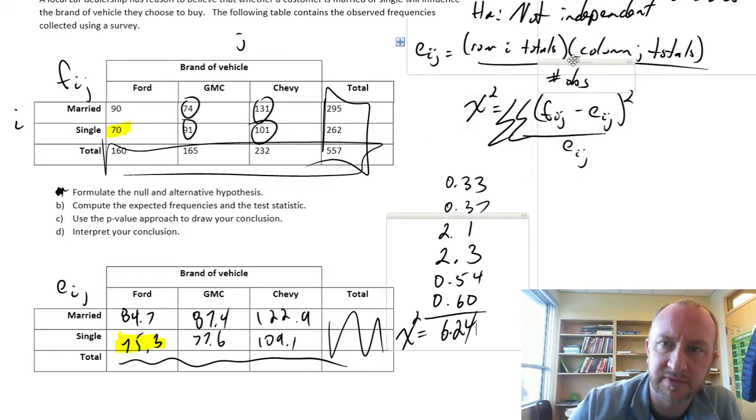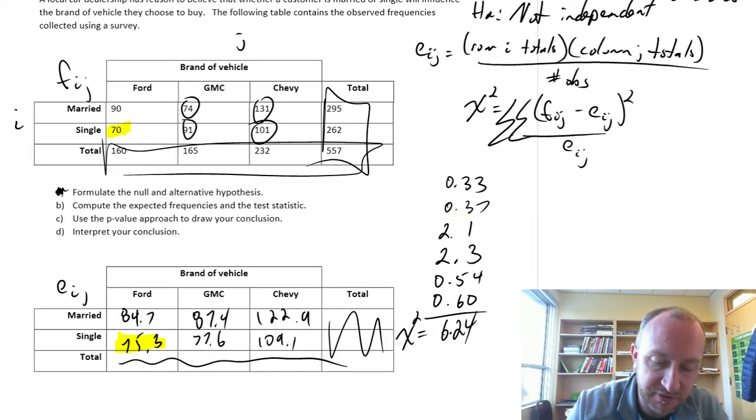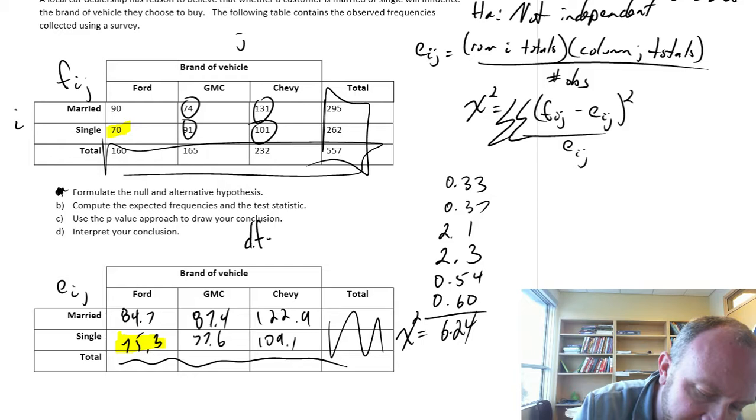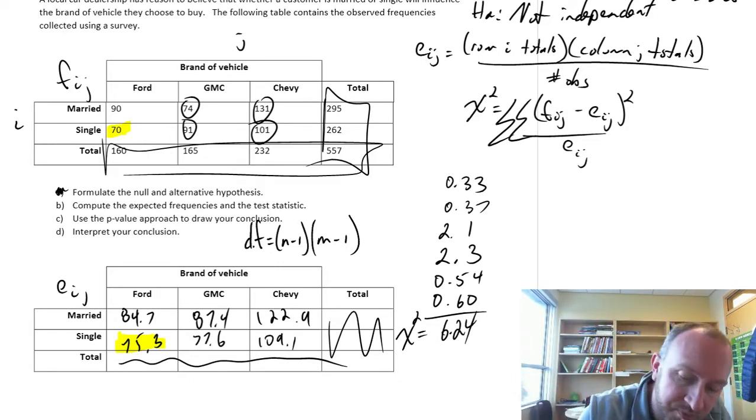We're good. Now we need to find the corresponding p-value. So our distribution here, again, the degrees of freedom for these, it's n minus 1 times m minus 1. n, number of rows. m, number of columns. So here I have 2 minus 1 times 3 minus 1. So this is 1 times 2. So I have 2 degrees of freedom.